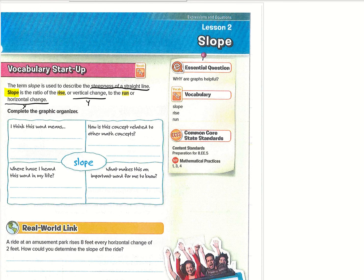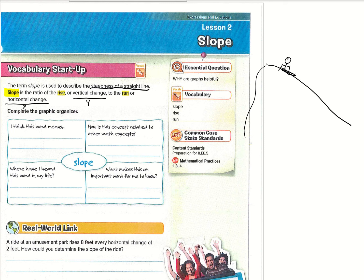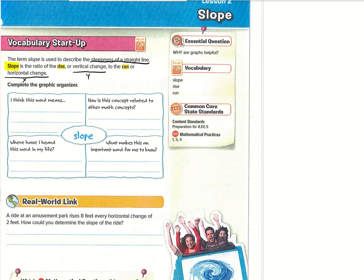It's also a really nice word, because as it says up here, the term slope is used to describe the steepness of a straight line. So if you think about going skiing — that's always the example I like — you're going down the slopes. So if that's the top of the mountain and you're going skiing this way, that is the slope that you're going down.